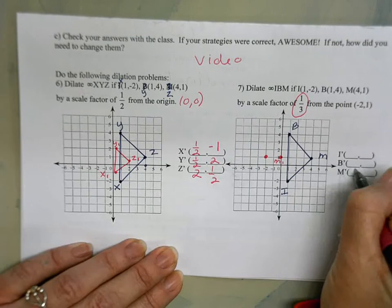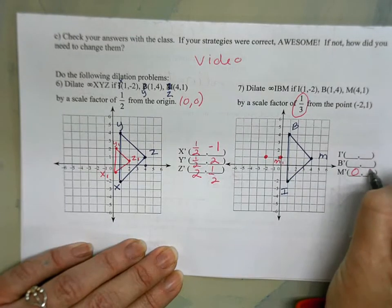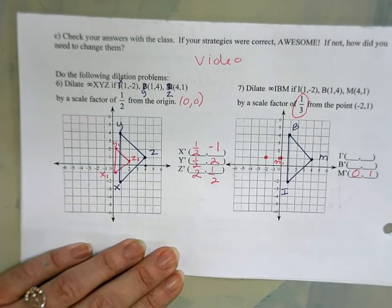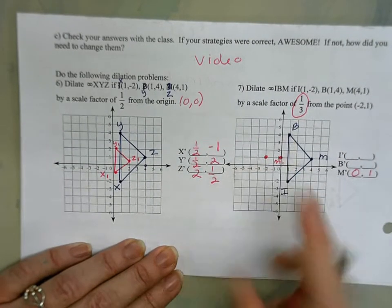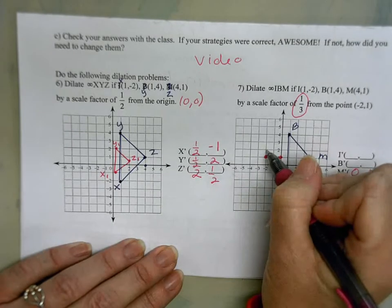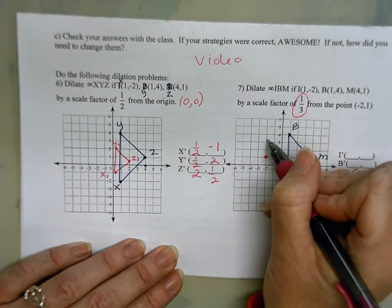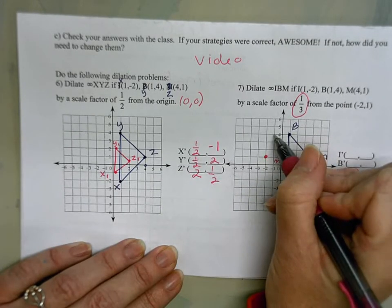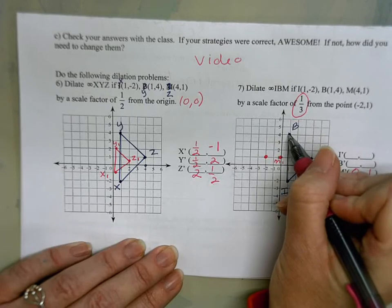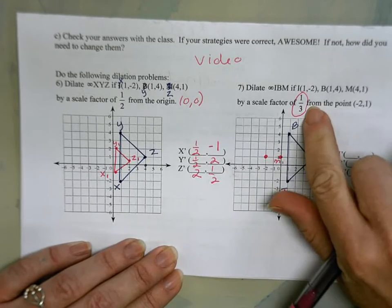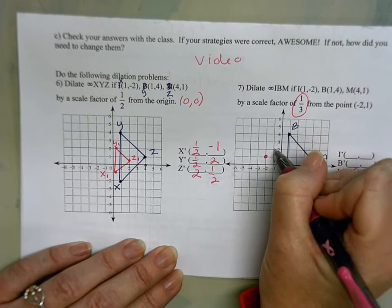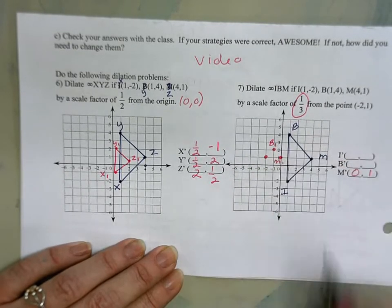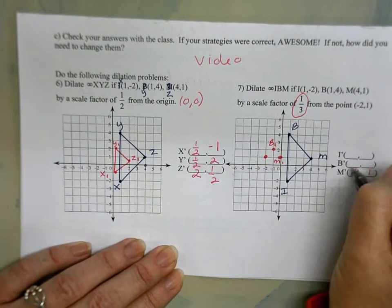And for B, to get from my point (-2,1) to B, I'm going up 1, 2, 3 and I'm going over 1, 2, 3. Well that's nice—to cut that in one third I'm gonna go up 1 and over 1. So this is my new coordinate for B, which looks like it's at (-1,2).